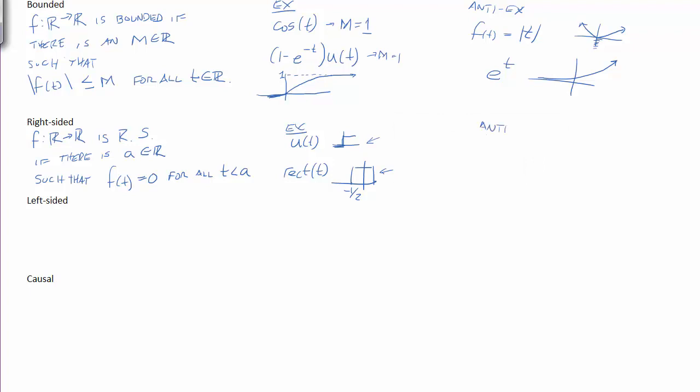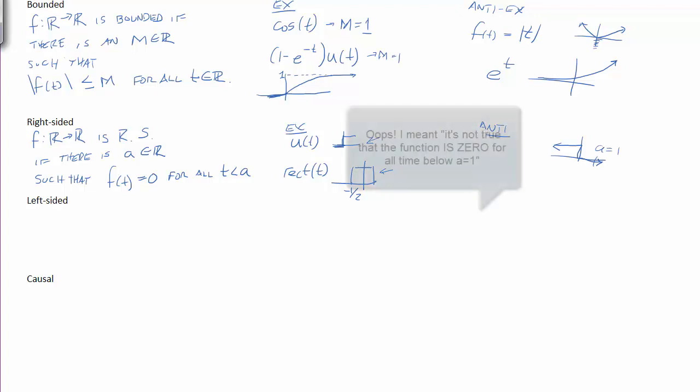So anti-examples include the time-reversed unit step. The unit step is always 1 when its argument is positive. The argument here is positive whenever t is negative. So this is the time-reversed unit step. And here you can never pick an a value such that the function is 0 before that value. Any negative time you pick, the function will always be 1 to the left of it. Including if you pick a positive a. So if you were to say, let's say a equals 1. Well then, it's not true that the function is 0 for all time below a equals 1.